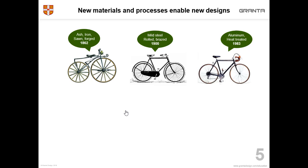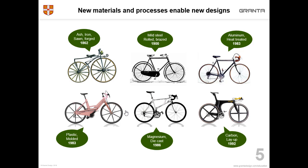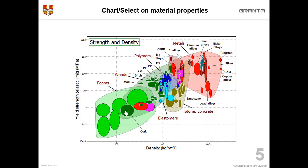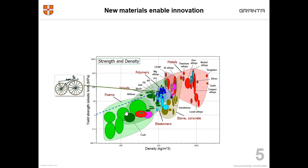You can see through these examples how the material choice affects the processing choice and vice versa, and how that material choice affects the design. This last one here was the first bike made using carbon fibre, and you can see that the design is dramatically different. You can also use the information in this database to select materials or to investigate the properties of materials that have been used in products. On a chart like this, towards the top and the left are lighter and stronger materials, and you can see how the different designs fit on this chart.